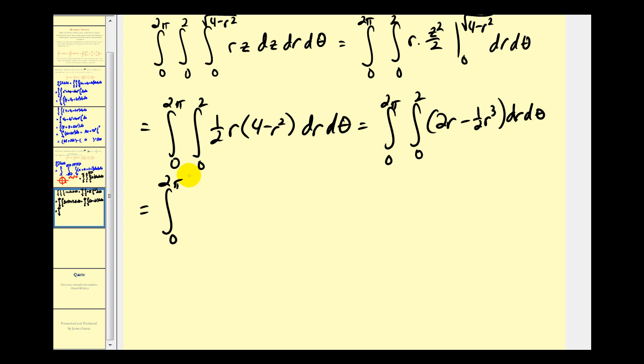We'll have two times R squared over two, which is R squared, minus one-half times R to the fourth over four, so minus one-eighth R to the fourth. Two for R will have four minus two to the fourth is sixteen divided by eight, that's two. So four minus two. So we have two theta.